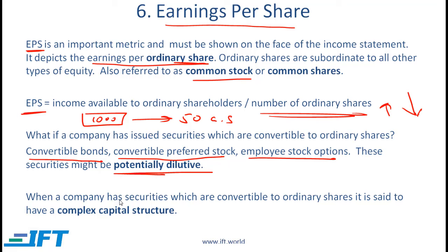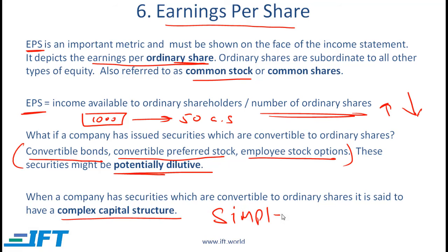When a company has securities which are convertible to ordinary shares, it is said to have a complex capital structure. So if any of these exist, then the company has a complex capital structure. If a company does not have convertible securities, then we say that it has a simple capital structure.